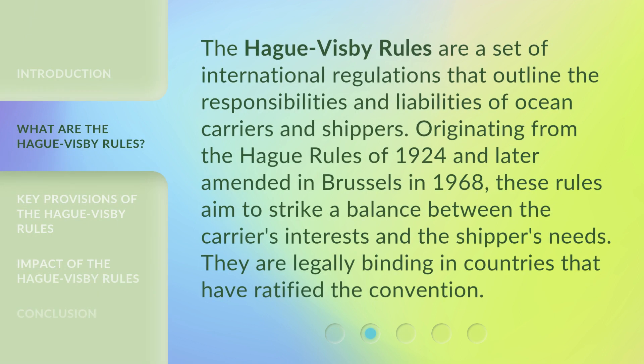The Hague-Visby Rules are a set of international regulations that outline the responsibilities and liabilities of ocean carriers and shippers. Originating from the Hague Rules of 1924 and later amended in Brussels in 1968, these rules aim to strike a balance between the carrier's interests and the shippers' needs. They are legally binding in countries that have ratified the convention.